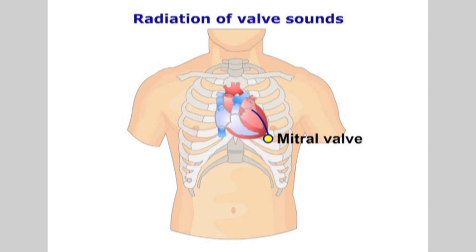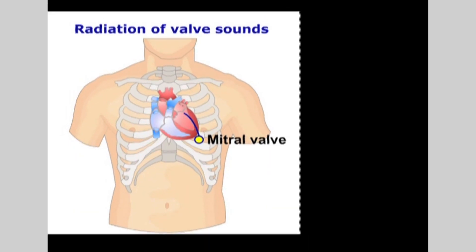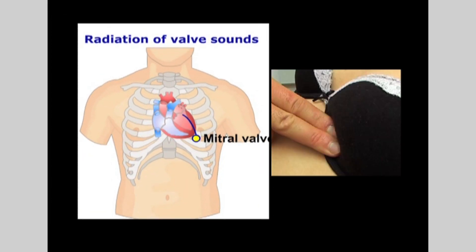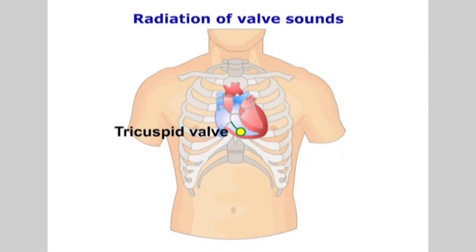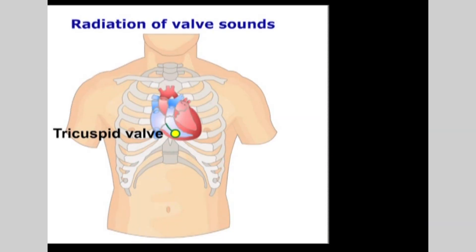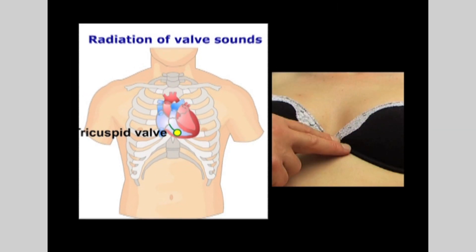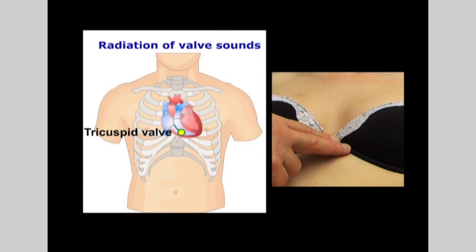The mitral valve is auscultated over the apex area — that is the fifth intercostal space, midclavicular line. The tricuspid valve is auscultated over the left sternal border below the fifth costal cartilage.